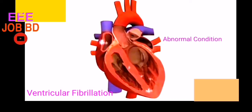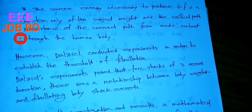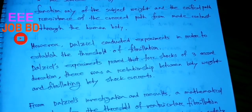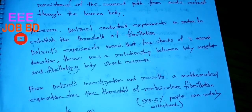Ventricular fibrillation (VF) is a function only of the subject weight and the critical path resistance of the current path formed by contact through the human body. This is the source energy necessary to produce ventricular fibrillation, related to the human body resistance. The experiment is then conducted based on these parameters.